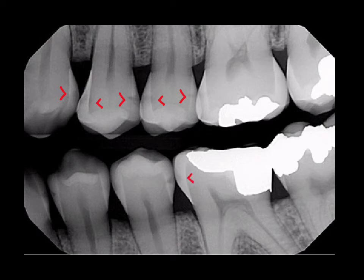Dropping down to the mandible, it looks like there is incipient decay on the mesial of 19 and probably beyond that on the distal of 20. Incipient decay, likely incipient decay, a little more pronounced on the mesial of 21 and the distal of 22.